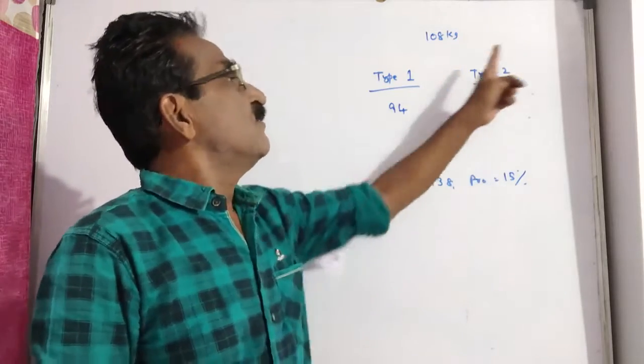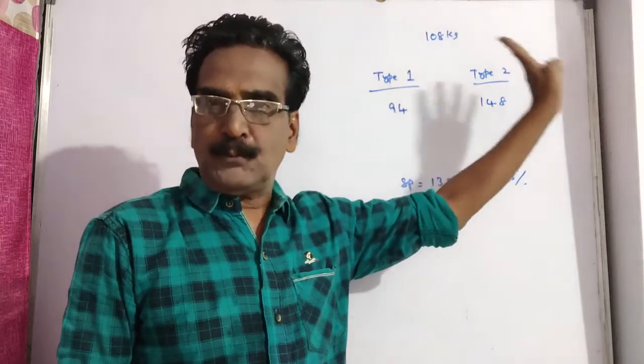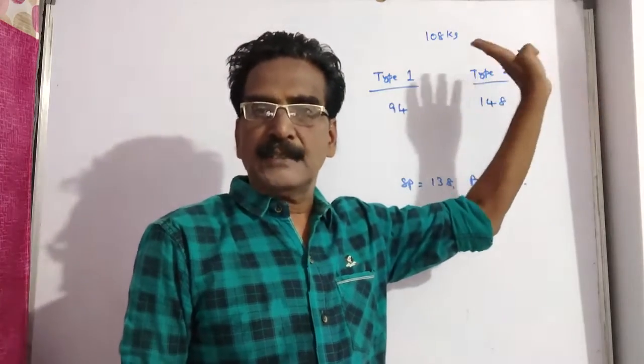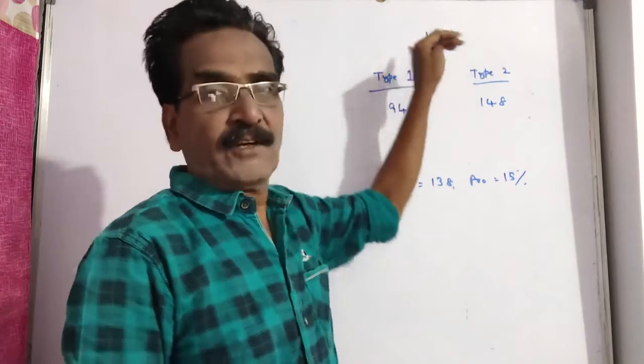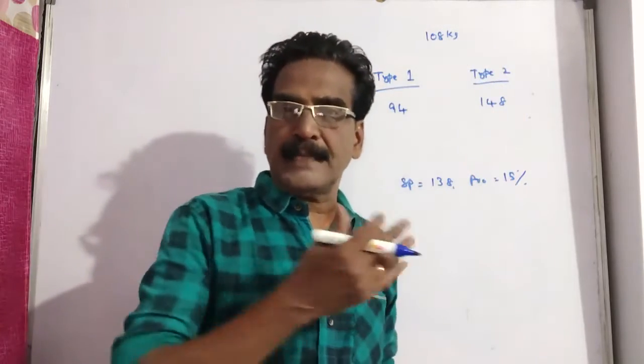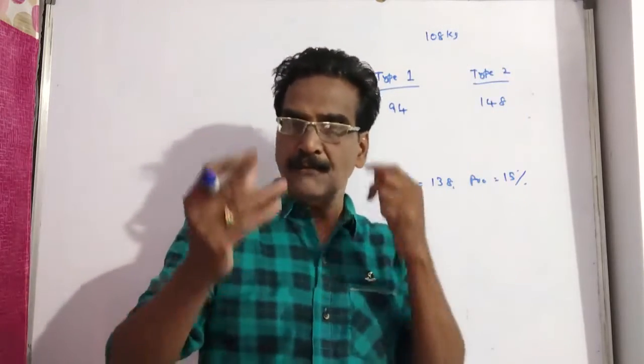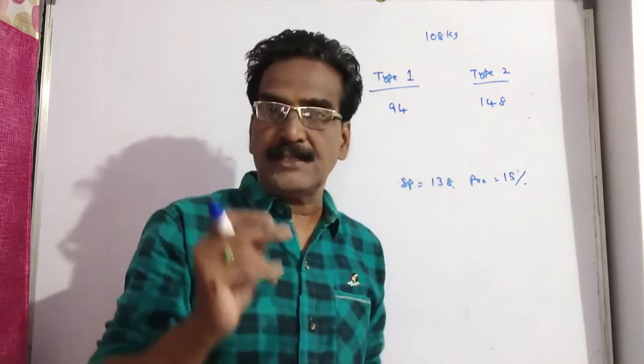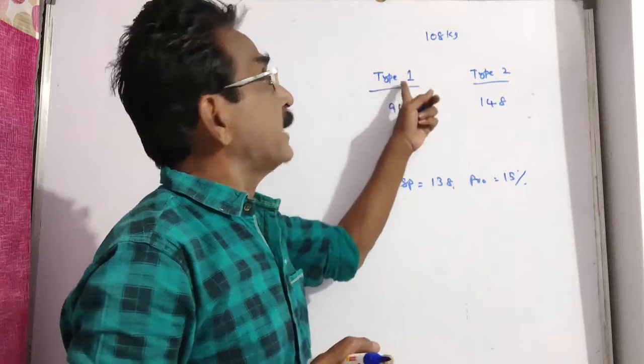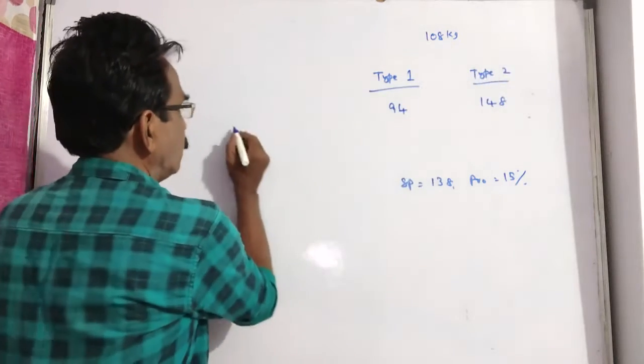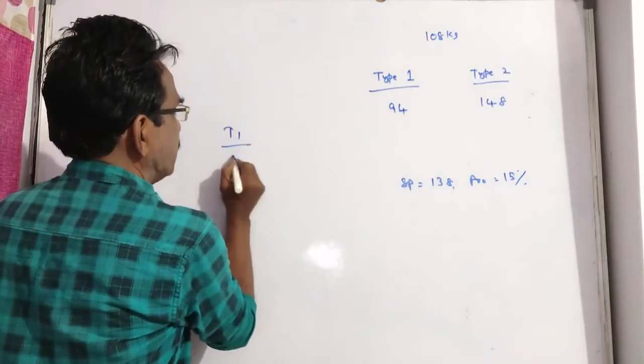Here the question is, what is the quantity of type 2 sugar if the total amount of sugar is 108 kg? This problem can be solved by rule of allegation. We know by rule of allegation, we get the ratio of quantities. Now we get the ratio of type 1 and type 2, that is quantities ratio.